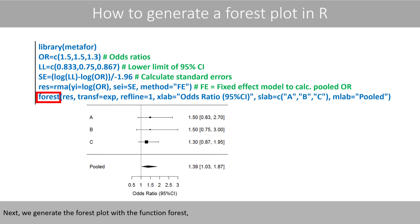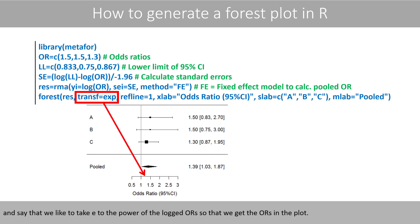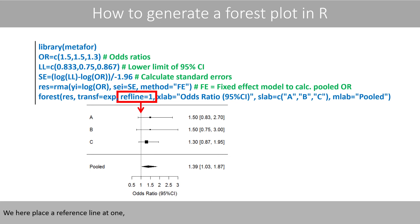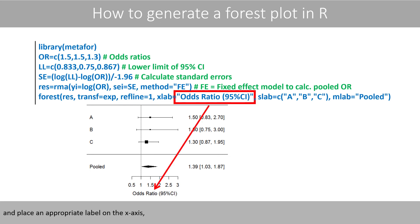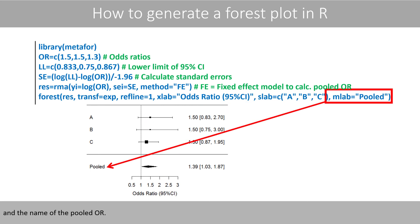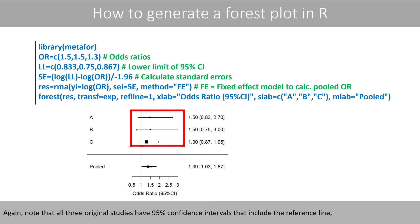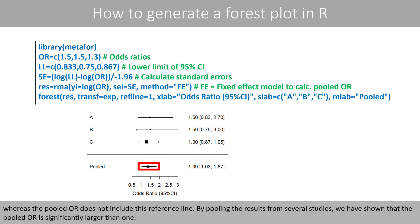Next, we generate the forest plot with the forest function, plugging in the previous output and specifying that we want e to the power of the logged odds ratios so the plot shows actual odds ratios. We place a reference line at 1, add an appropriate x-axis label, study names, and a label for the pooled odds ratio. Note that all three original studies have 95% confidence intervals including the reference line, whereas the pooled odds ratio does not — demonstrating that by pooling the results, the pooled odds ratio is significantly larger than 1.